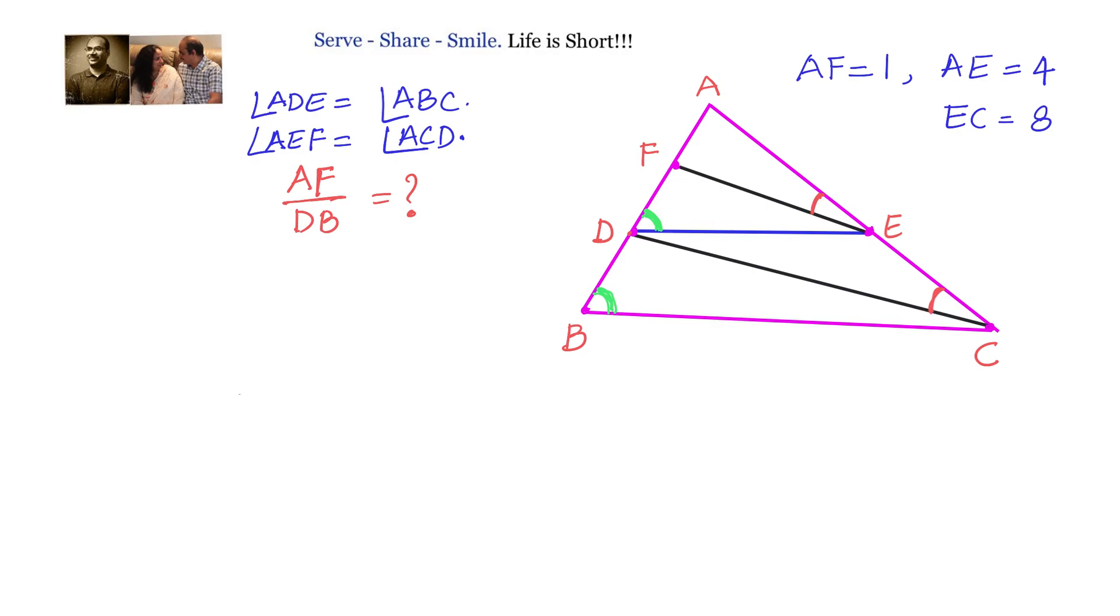We know AF equals 1, AE equals 4, EC equals 8. The diagram may not exactly represent the dimensions given, but this is an arbitrary diagram we have drawn.